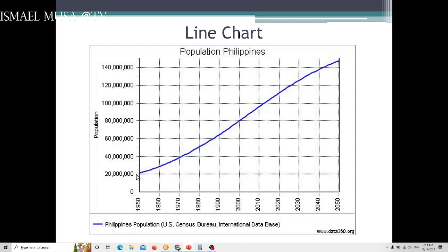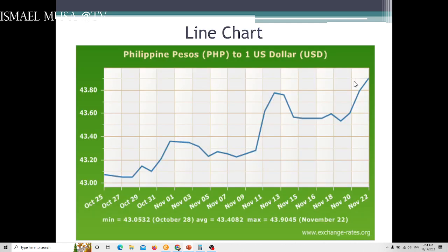Of course, this is based on historical data. U.S. Census Bureau International Database. It started 1950s, there were only 20 million Filipinos. And by 2050, we expect about 150 million Filipinos.